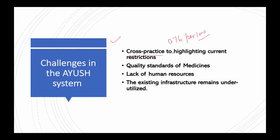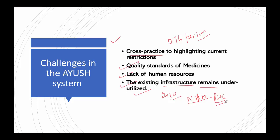Quality standards and scientific validation of AYUSH have not progressed in spite of dedicated expenditure in the past. There is also a lack of human resources, as practitioners are moving away from the traditional system for better opportunities, and existing infrastructure remains underutilized. The Fourth Common Review Mission report of 2010 of the National Health Mission reported the underutilization of AYUSH physicians as medical officers in Primary Health Centers, particularly in Assam, Chhattisgarh, Maharashtra, Madhya Pradesh, and Uttarakhand, noting a lack of appropriate training in allopathic drug dispensation as a deterrent.